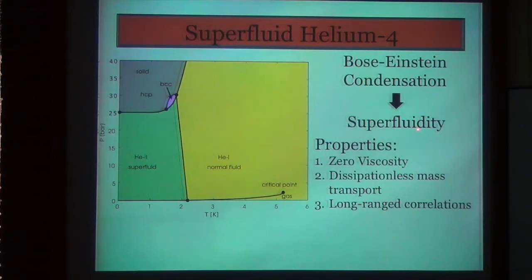So because helium-4 is a boson, as you reduce the temperature, a macroscopic number of particles can condense into a single particle state. In the case of low temperatures, all these particles are condensing into the ground state or the zero momentum state. And this condensation causes all sorts of interesting properties to arise in the fluid. Here's just a list of the most important ones. First is zero viscosity, a complete lack of viscosity. Second is dissipationless mass transport. This means the fluid can flow without losing energy to any excitations. And finally, long-range correlations exist in the fluid.